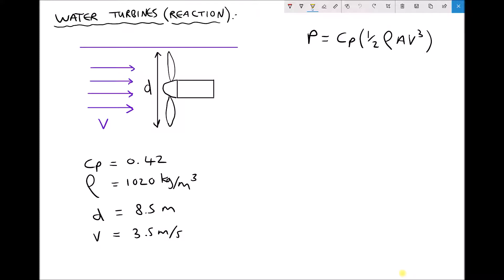Now most of these terms are relatively self-explanatory. We have the power in watts, we have the density of the fluid and we have the velocity of the fluid. We have an additional two terms there.